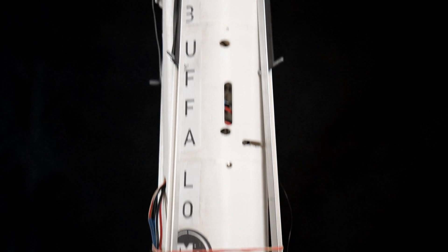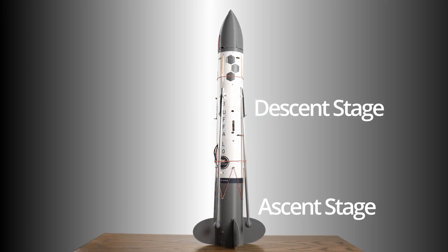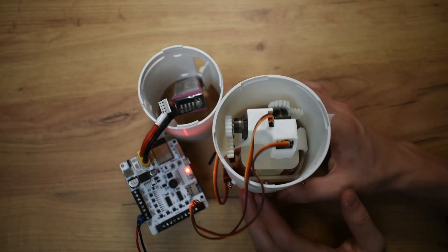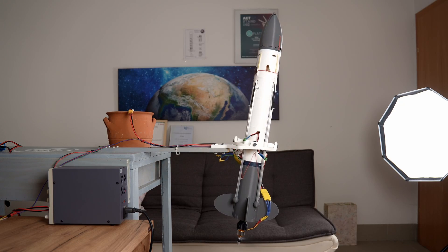Buffalo L is aimed at achieving a propulsive landing. The rocket consists of two stages that both feature a thrust vector control system for active stabilization.